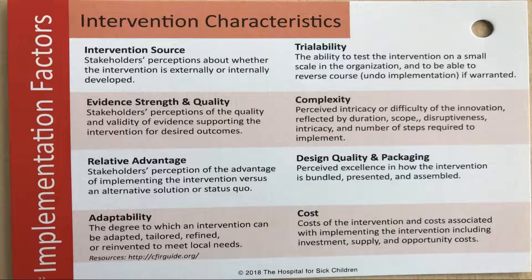For intervention characteristics, consider the intervention source — stakeholders' perception about whether the intervention is externally or internally developed. Then trialability, the ability to test the intervention on a small scale in the organization and reverse course if warranted. Evidence strength and quality reflects stakeholders' perception of the quality and validity of evidence supporting the intervention. Complexity refers to the perceived intricacy or difficulty of the innovation, reflected by duration, scope, disruptiveness, intricacy, and number of steps required to implement.